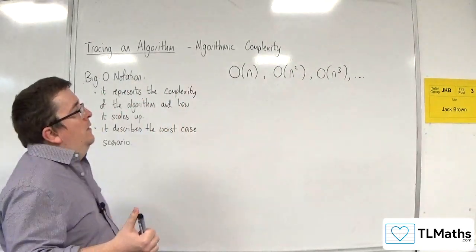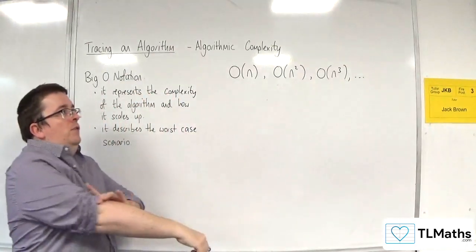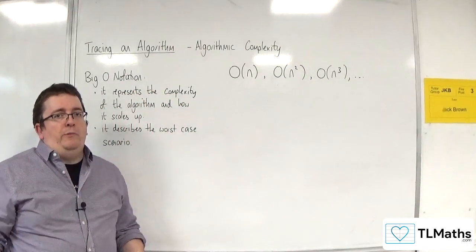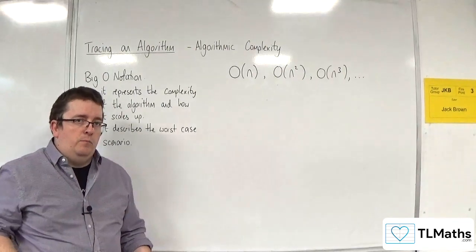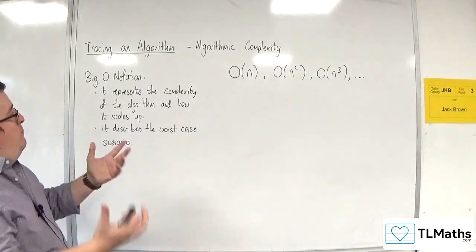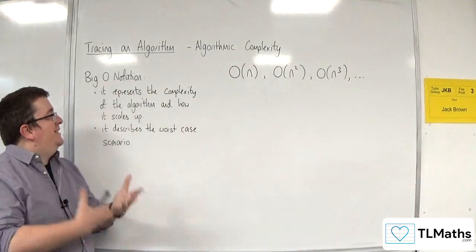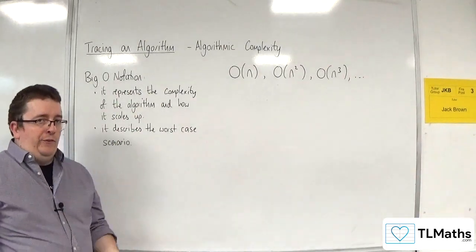So the larger that power of n, the longer the run time is going to be when you extend the problem itself. So it represents, as it says here, the complexity of the algorithm and how it scales up.